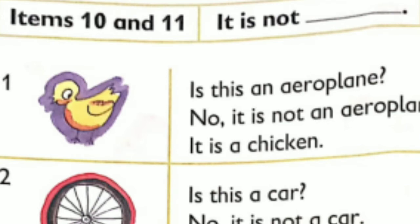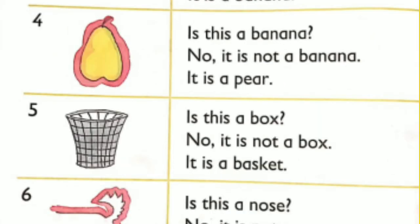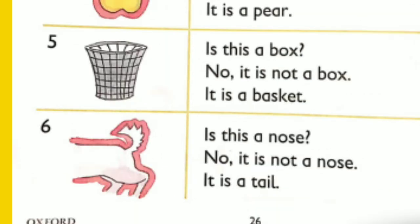Items 10 and 11 — It is not. Is this an aeroplane? No, it is not an aeroplane. It is a chicken. Is this a car? No, it is not a car. It is a wheel. Is this an orange? No, it is not an orange. It is a banana. Is this a banana? No, it is not a banana. It is a pear. Is this a box? No, it is not a box. It is a basket. Is this a nose? No, it is not a nose. It is a tail. Answer the questions: Are you a boy? Are you a girl? Are you a teacher? Are you a man? Are you a woman? Are you a pupil?